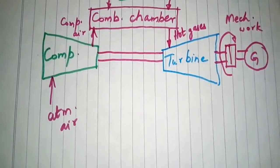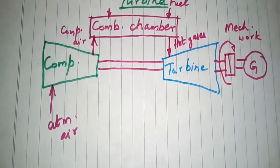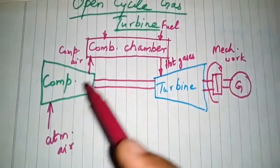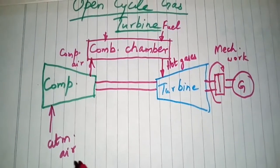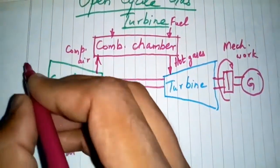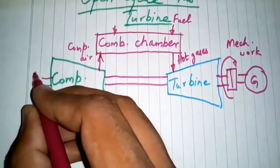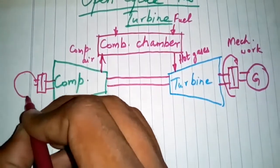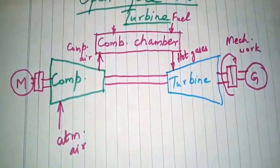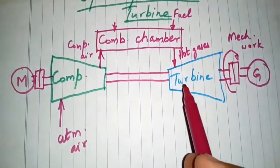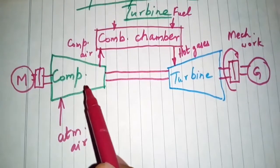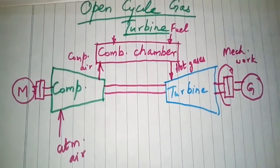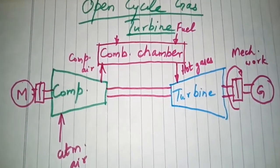The working of the open cycle gas turbine follows a constant pressure process. A starting motor is required to run the compressor initially. As soon as power is developed by the turbine and given to the compressor, the starting motor is shut off.